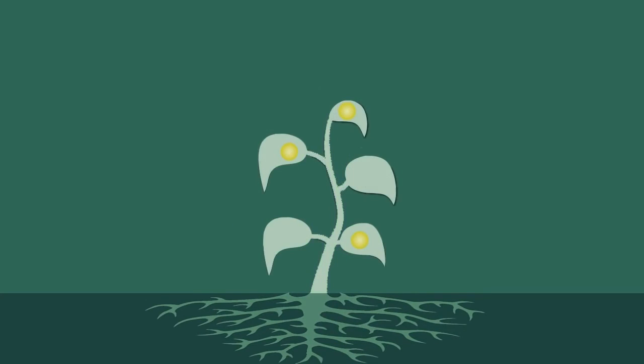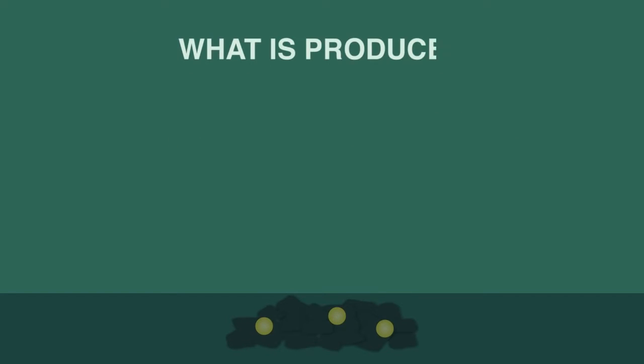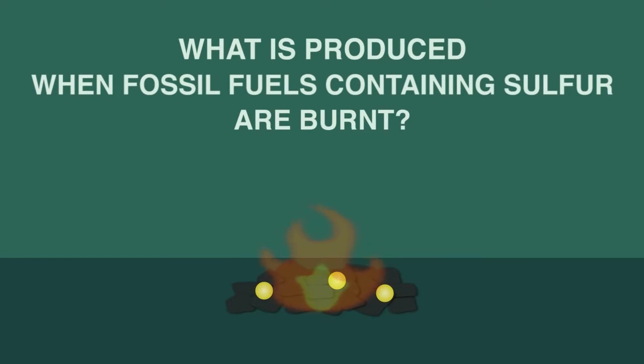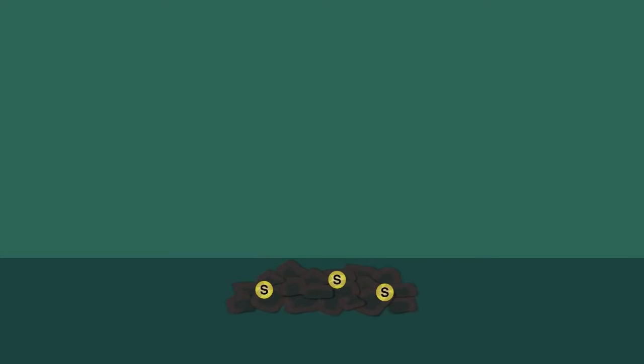When plants die, and eventually form coal and oil over millions of years, these sulfur atoms remain bonded to the carbon atoms. The sulfur content of coal and oil is usually between 1 and 4 percent by weight. What do you think is produced when fossil fuels containing sulfur are burnt? When the coal is burnt, the sulfur and the carbon atoms join with oxygen from the air and are released into the atmosphere as carbon dioxide and sulfur dioxide.